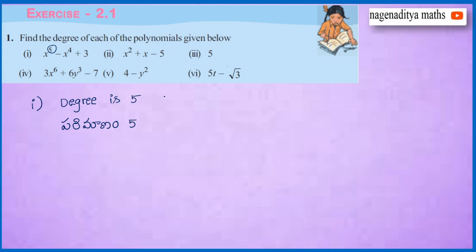The second one is x square plus x minus 5. Clearly its degree is 2. Degree is 2.